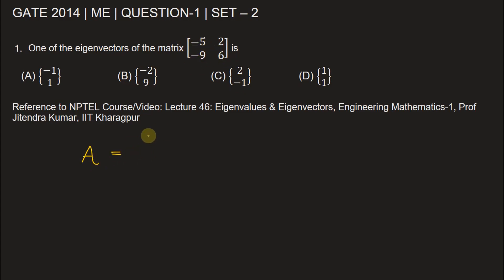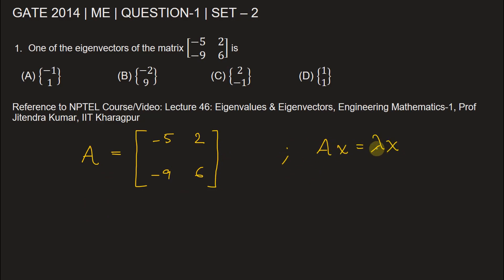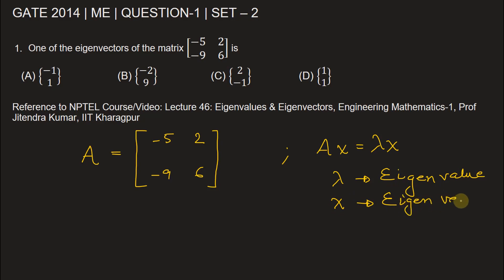The given matrix A is [[-5, 2], [-9, 6]]. From the property of eigenvalues and eigenvectors, we know that if Ax = λx, and if this condition is satisfied, then λ is the eigenvalue and x is the eigenvector. To find eigenvectors directly would be a longer process since we need to first find the eigenvalues and then substitute those values to find the eigenvectors.